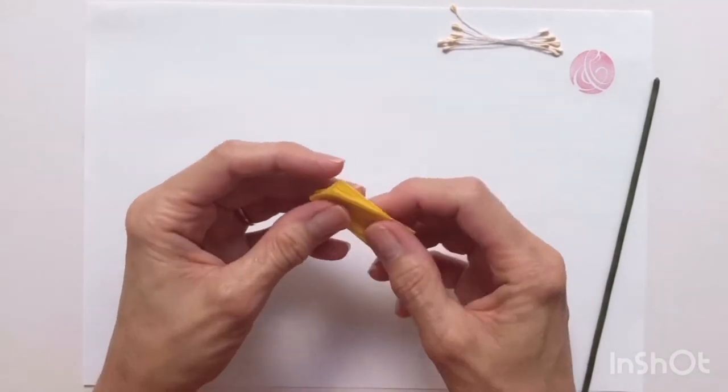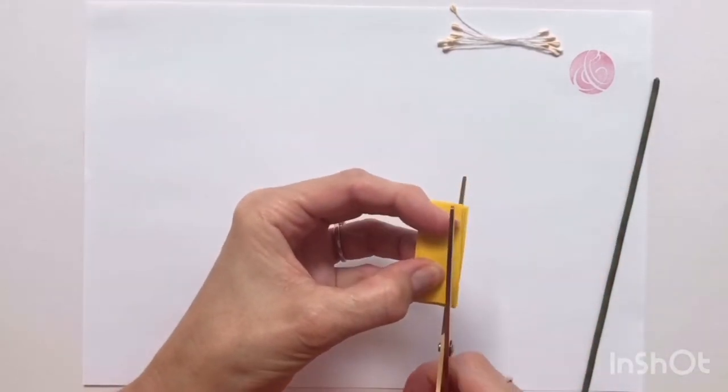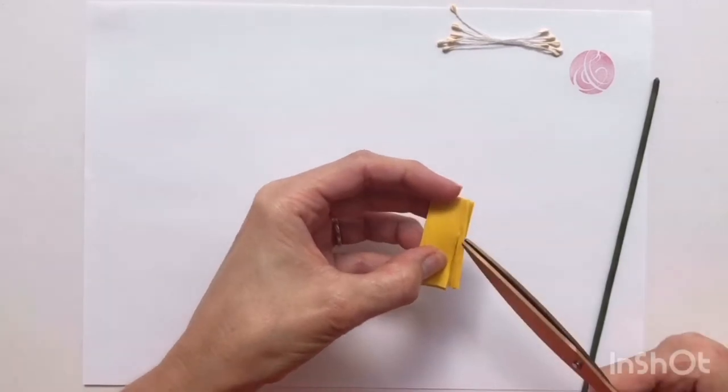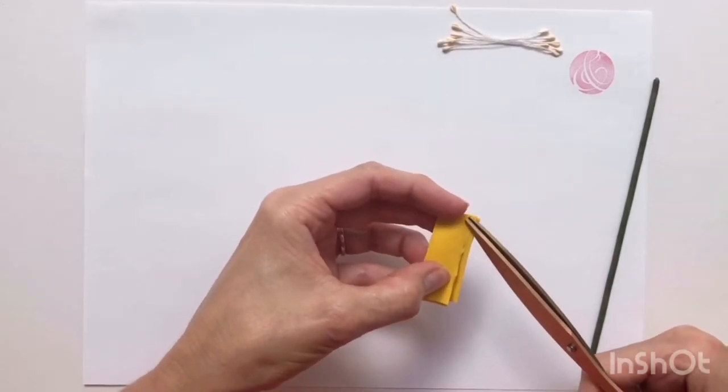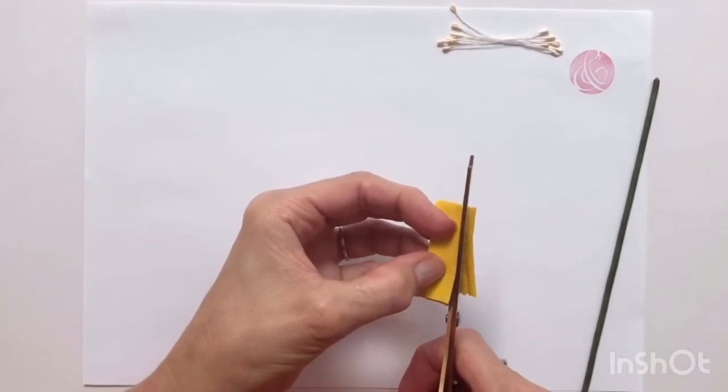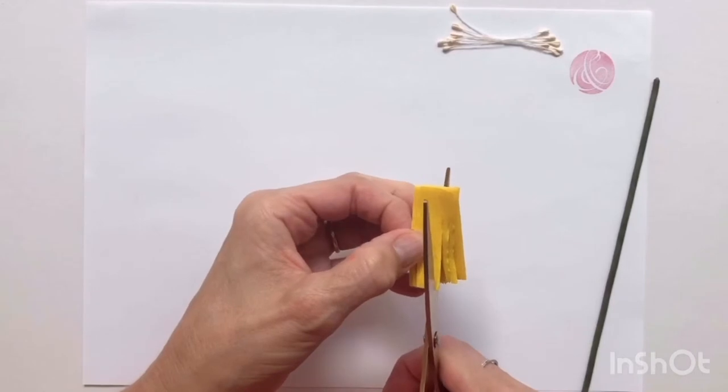So just do that along. Then we're going to take our scissors and make tiny little snips. You want to go down to about a centimeter from the end and just make very fine snips.